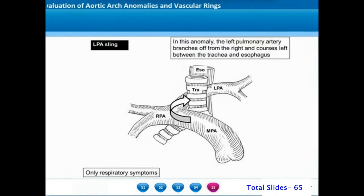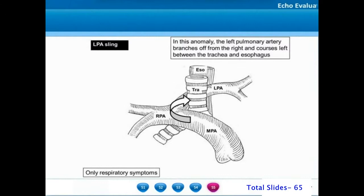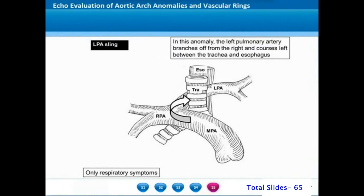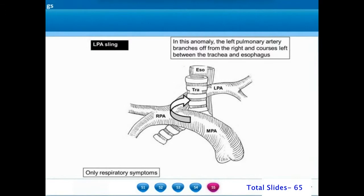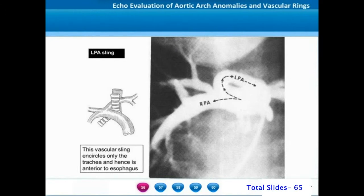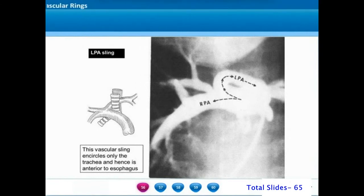Yet another cause of vascular obstruction of the trachea is the left pulmonary artery sling. Here the left pulmonary artery arises from the mediastinal portion of the right pulmonary artery and courses between the trachea and esophagus to emerge onto the left side of the mediastinum, causing a sling-like narrowing of the trachea. A conventional angiogram will demonstrate the abnormal course of the left pulmonary artery. In most patients with left pulmonary artery sling, there is an associated tracheal abnormality with complete tracheal rings.